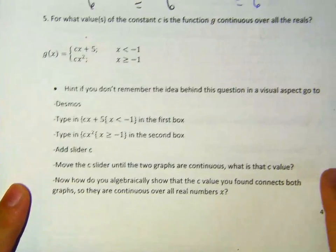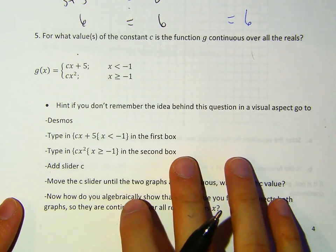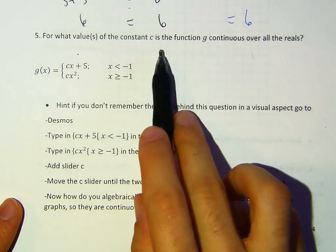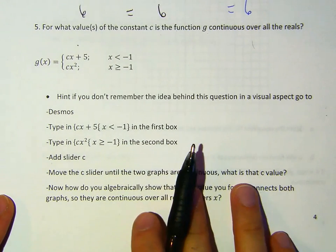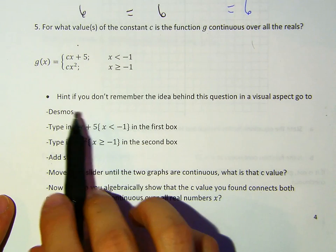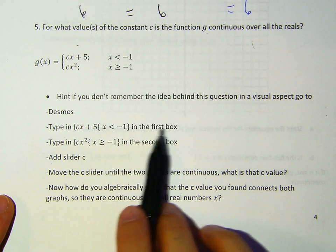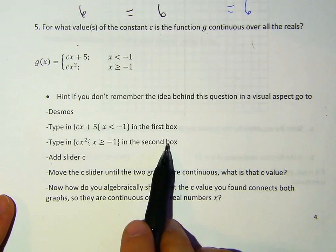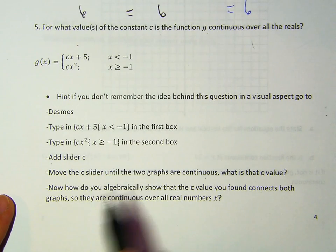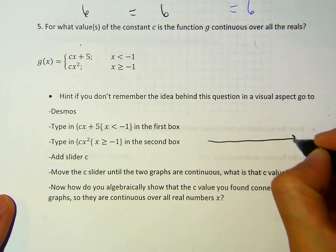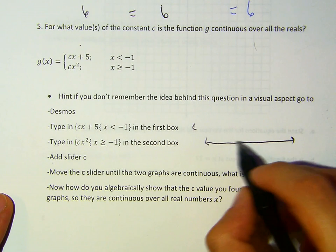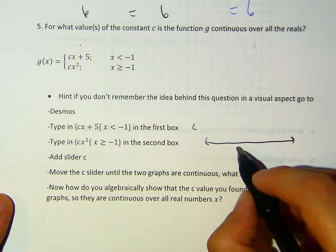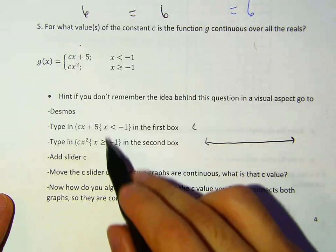Let's try and do the next one. Here, for this question, it's pretty nice. But what I want you to do is for what values of C is the function G of X continuous over all reals? So if you don't remember how to do this, what I want you to do is go to Desmos and type this in, type this in, add the slider. And then what you're going to do is you're going to get like a value of C, right? And you're going to move the slider left and right.